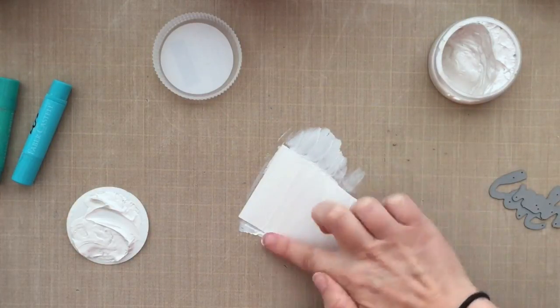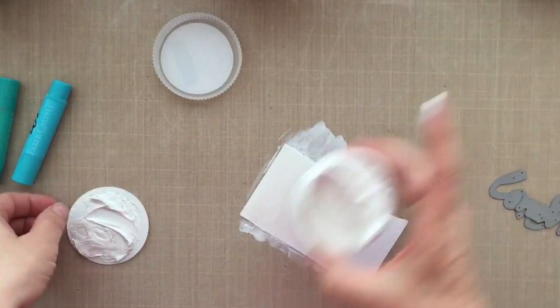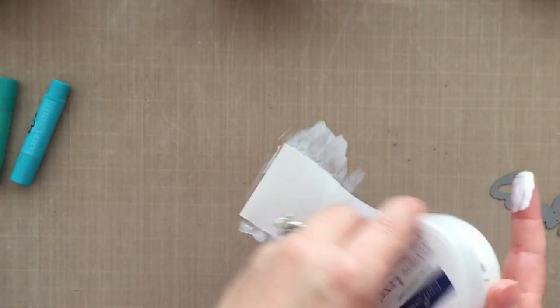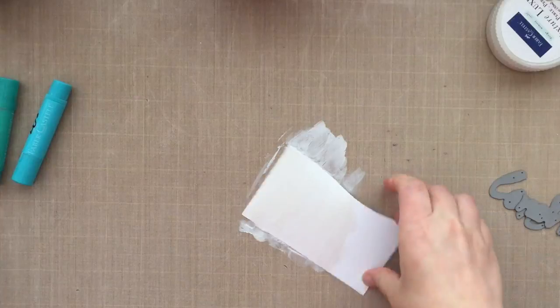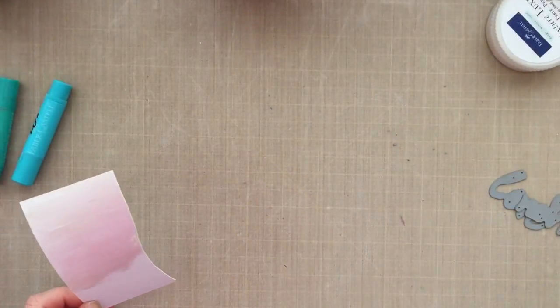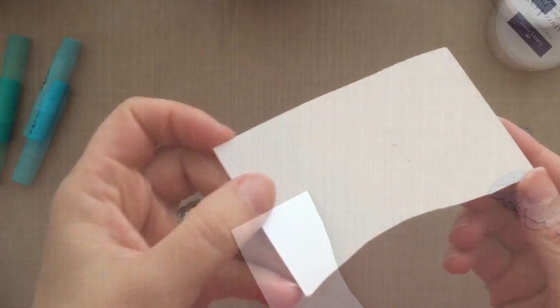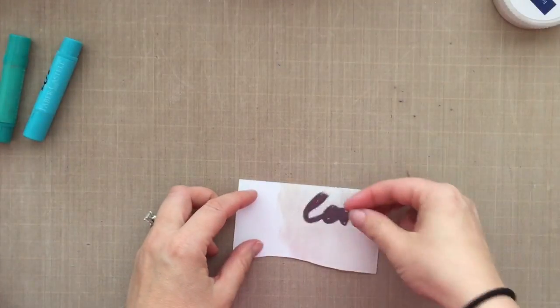It does not take long for this to dry, but I tell you, this stuff is pretty. It goes on super smooth, it goes on like butter, and it dries and you get this pearly shine. It's so pretty. And then I'm going to die cut that word die, love you, out with that right over that Texture Luxe piece. I just love the shine that it leaves behind.